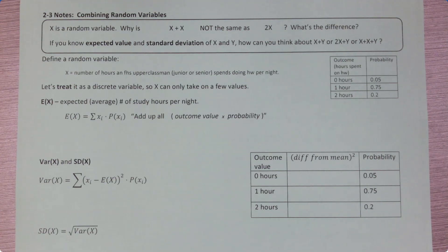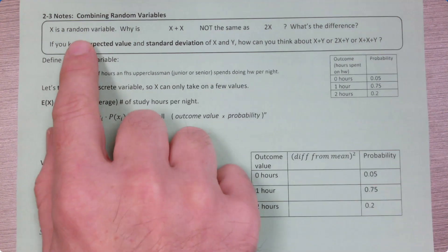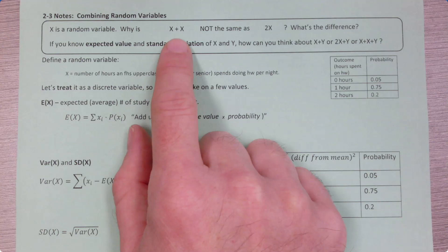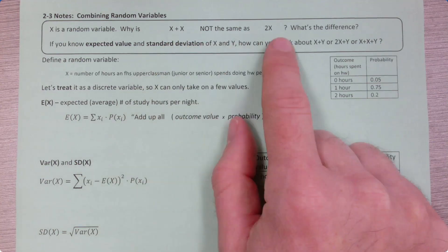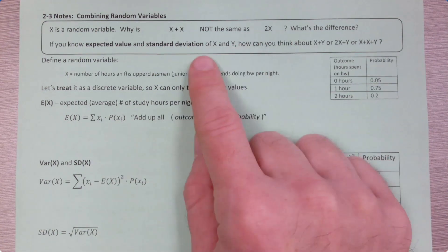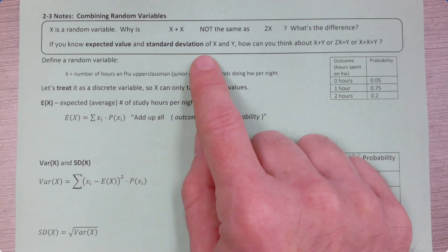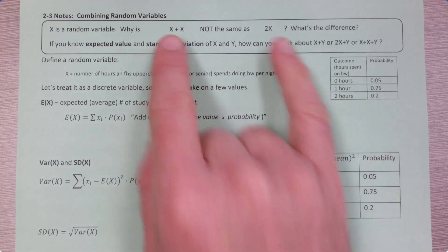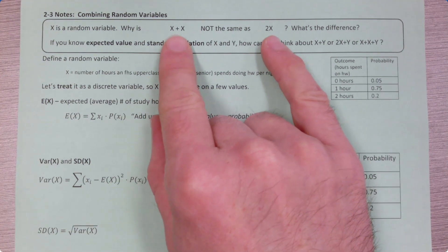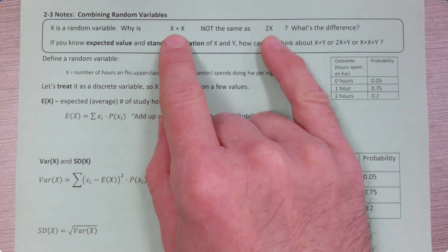Hello, everybody. Let's talk about combining random variables. So, x is a random variable. In general, x plus x is not the same thing as 2x. It is in algebra, but it's not if x is a random variable. So, a big theme of today's notes is why are these two situations not, in general, the same? And what's the difference?